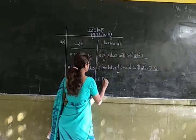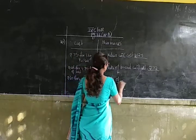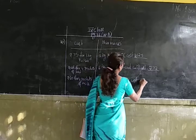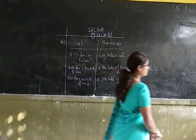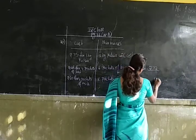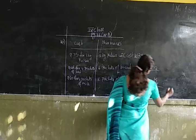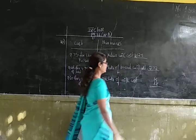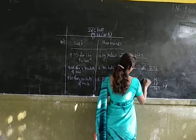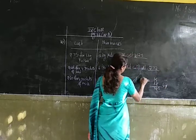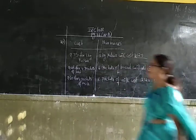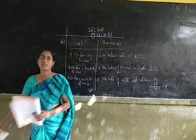8 packets of milk cost is equal to: we multiply 15 by 8. 8 fives are 40, carry 4. 8 ones are 8 plus 4 is 12. So it is Rs. 120. The cost of 8 packets of milk is Rs. 120.